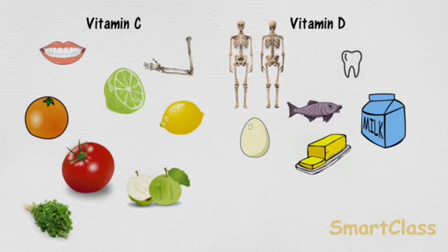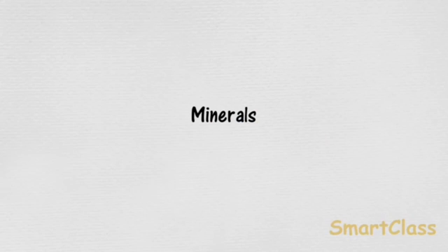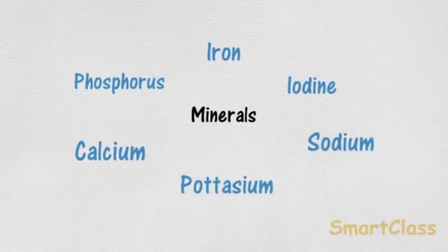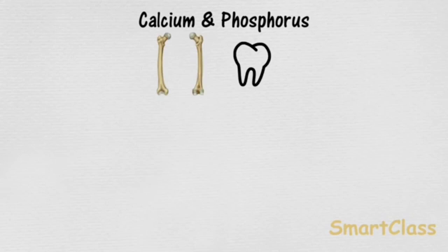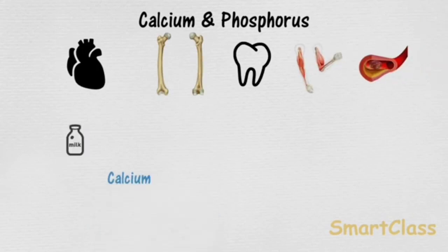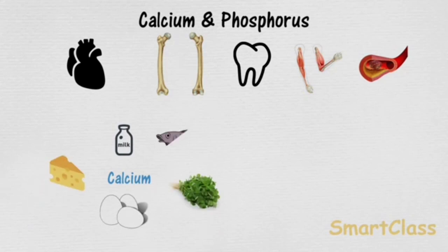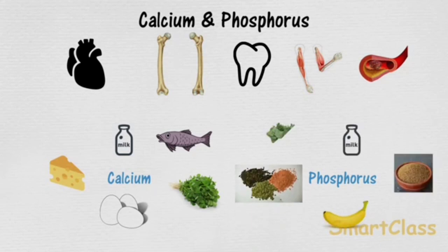Next, minerals. Minerals are also needed by our body in small amounts. Each one is essential for proper growth of the body and to maintain good health. First, calcium and phosphorus are needed by our bones and teeth, so we have to include milk, fish, cheese, eggs, and bananas in our food items.